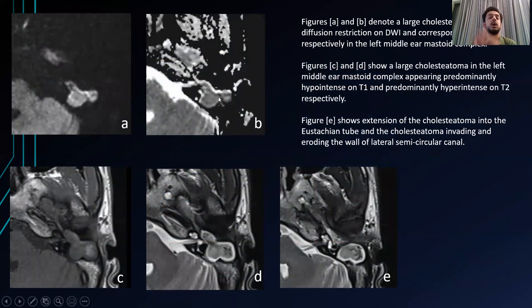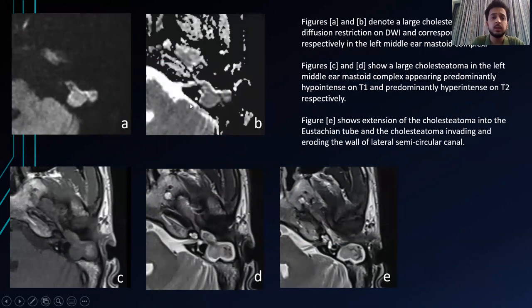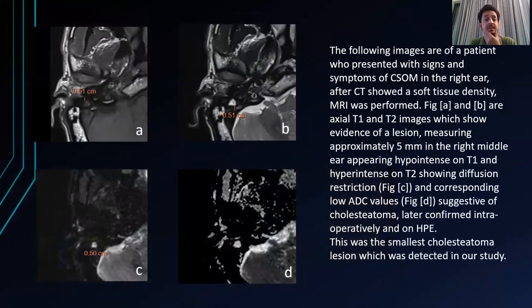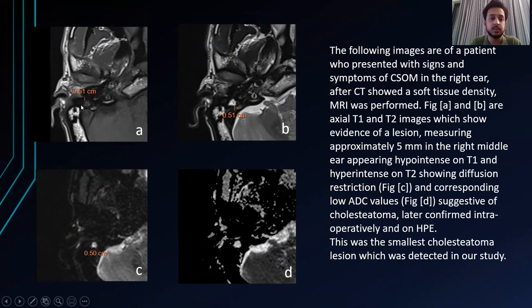Here are some cases. The first case had a large cholesteatoma in the left middle ear, which appeared predominantly hypointense on T1 with a few hyperintense foci, predominantly hyperintense on T2 axial, and showed diffusion restriction with low ADC values. The soft tissue was seen extending into the Eustachian tube. In the second case, there is a soft tissue lesion in the right middle ear on axial images, appearing hyperintense on T1 measuring 5 mm, with corresponding hyperintensity on T2 and showing diffusion restriction and low ADC values. This was the smallest cholesteatoma we detected, at 5 mm.